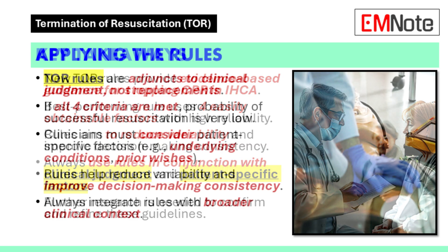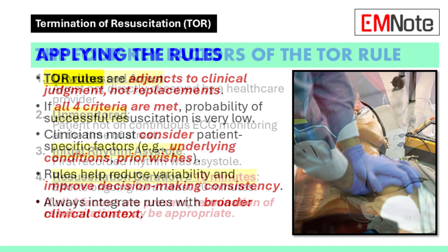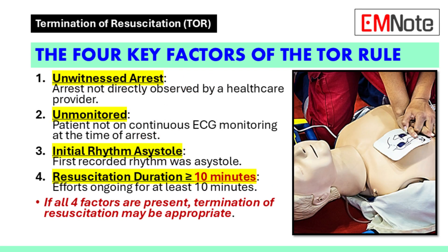It all comes down to open communication and shared decision-making. It's about finding that middle ground — using these rules effectively while still prioritizing each patient's individual needs and values. End-of-life care needs to be compassionate, humane, and tailored to each patient's specific needs. These rules are a big step in the right direction, but they're just one part of a much larger effort to improve end-of-life care. It's an ongoing journey.